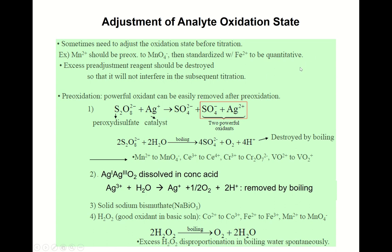First, you have to convert all the iron to the ferrous state so that permanganate can oxidize it. In almost all cases you need to adjust the oxidation state of the compound of interest. If you want to do an oxidation reaction, all your analyte must be converted to the reduced state first.